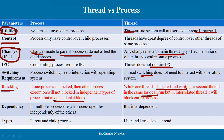Regarding dependency: multiple processes each operate independently of the others. Whereas threads are interdependent on each other. For types: processes have parent and child processes, created through a fork system call as we have seen in earlier lectures. For threads, user-level threads and kernel-level threads are the two types available.